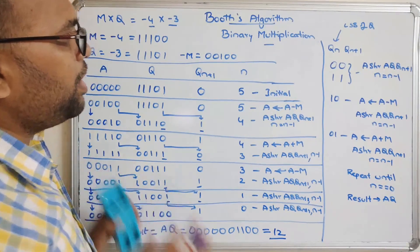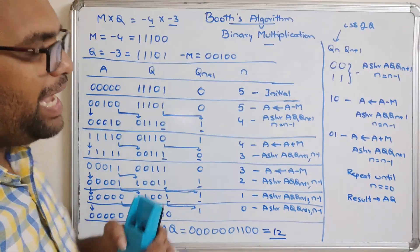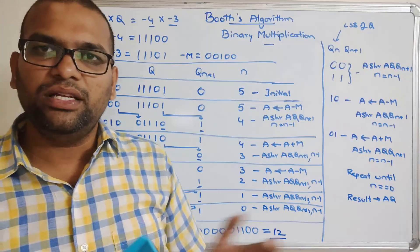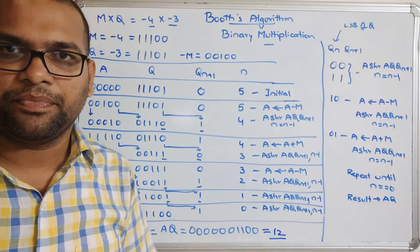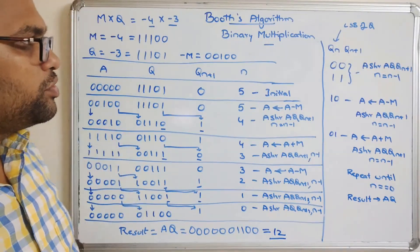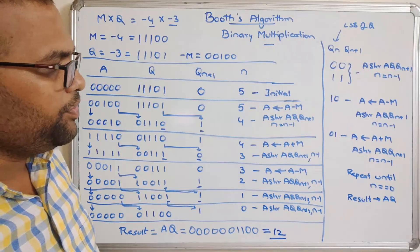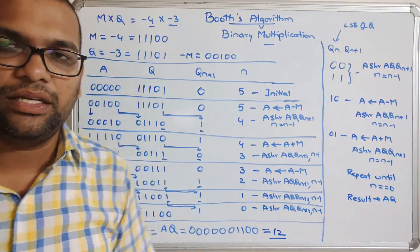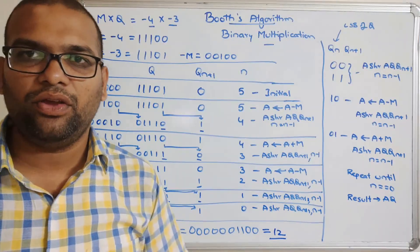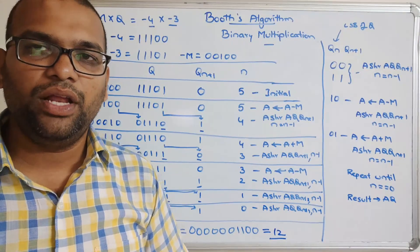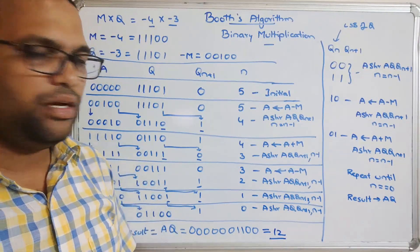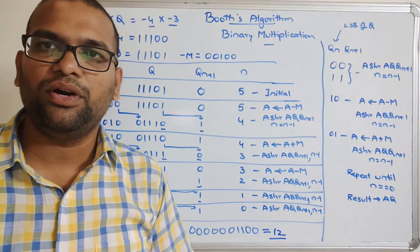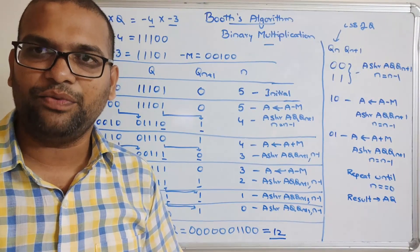This is how we can perform multiplication of any signed numbers using Booth's algorithm. Hope you understood this procedure. If you have any doubts, feel free to post in the comment section and I will try to clarify them. If you enjoyed my session, please like, share with your friends, and don't forget to subscribe to our channel. Thanks for watching.